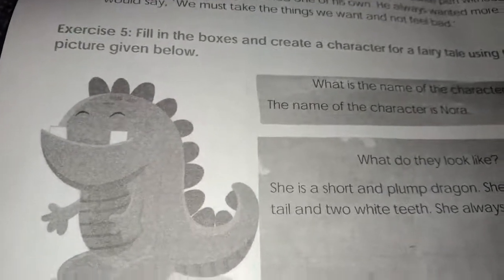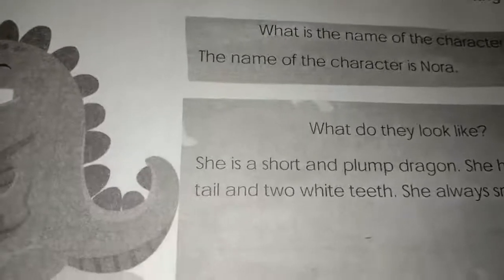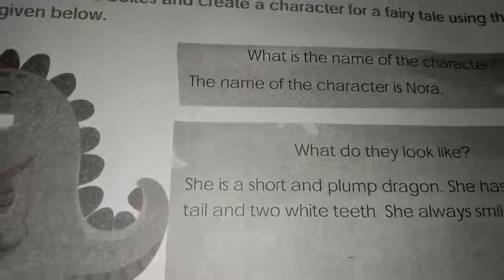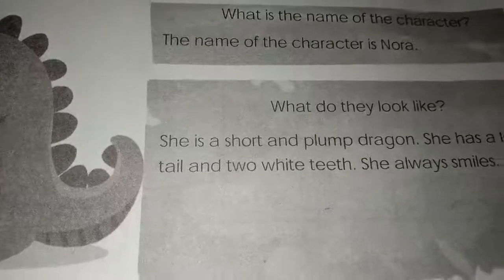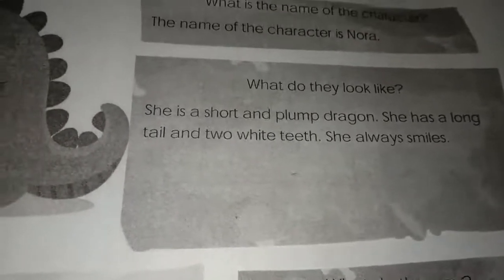Exercise 5 — fill in the boxes and create a character for a fairy tale using the picture given below. First: what is the name of the character? You can give any name. The name of the character is Nora. What do they look like? She is a short and plump dragon. She has a long tail and two white teeth. She always smiles.